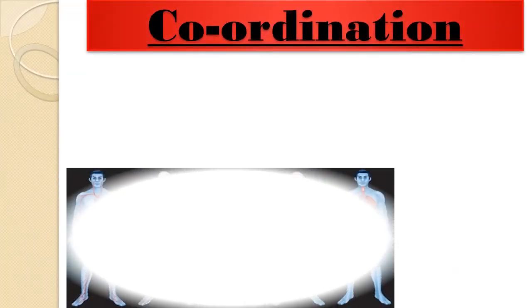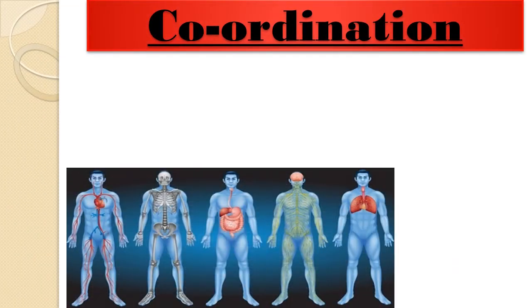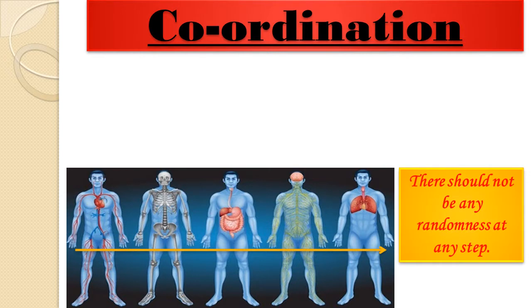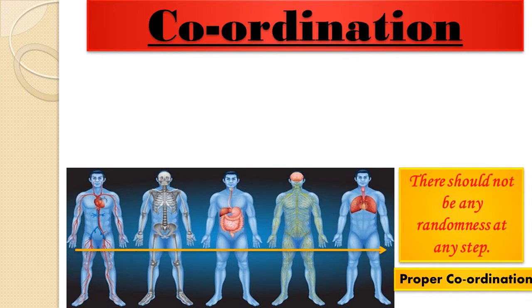If any activity in the body is to be completed successfully, proper coordination between different organ systems and organs participating at different steps of that activity is necessary. If due to lack of coordination there is confusion at any step, the activity may not get completed, and there should not be any randomness at any step.